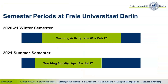The semester itself runs from October 1st to March 31st. However, you won't have courses the entire time. Teaching activity — Vorlesungszeit in German — runs between November 2nd and February 27th. In the summer term, teaching activity runs from April 12th to July 17th, although the semester itself runs from April 1st to September 30th.